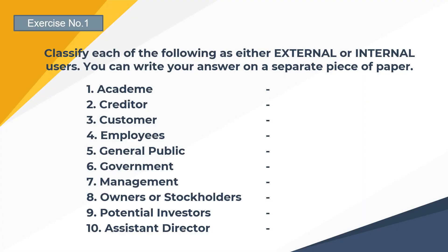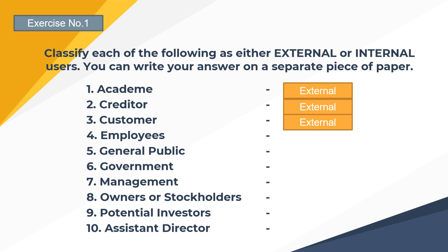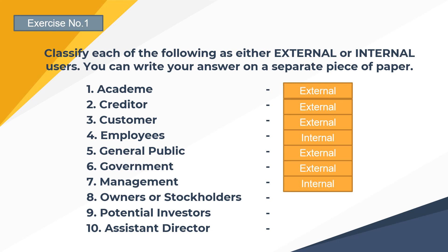For Exercise 1, classify each of the following as either external or internal users. Academe — external. Creditor — external. Customer — external. Employees — internal. General public — external. Government — external. Management — internal. Owners or stockholders — internal. Potential investors — external. Assistant director — internal.